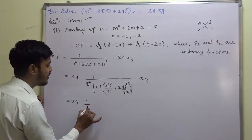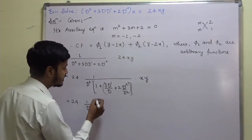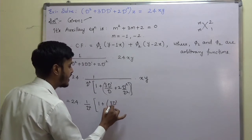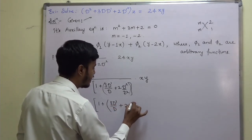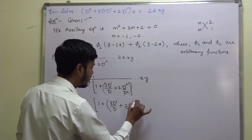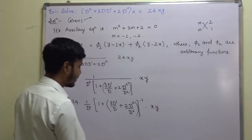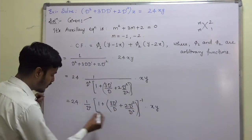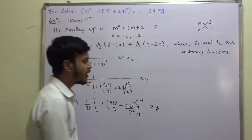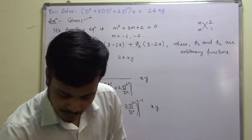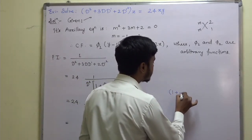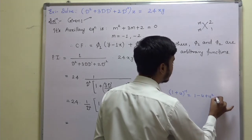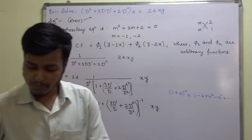After taking D-squared common, this becomes 24 times (1/D-squared) times (1 + 3 D-dash/D + 2 D-dash-squared/D-squared)^(-1) into xy. This is like (1 + u)^(-1), and its binomial expansion is 1 minus u plus u-squared minus u-cubed and so on. So I am going to make use of this expansion.